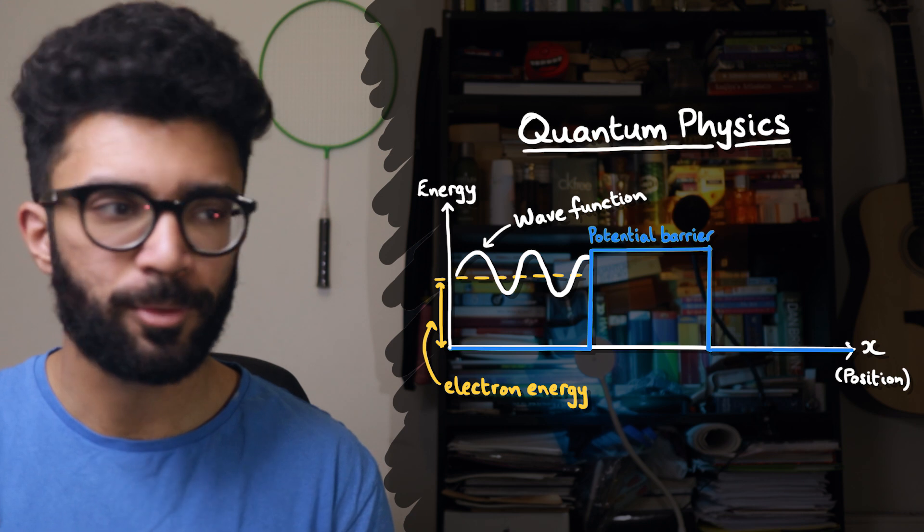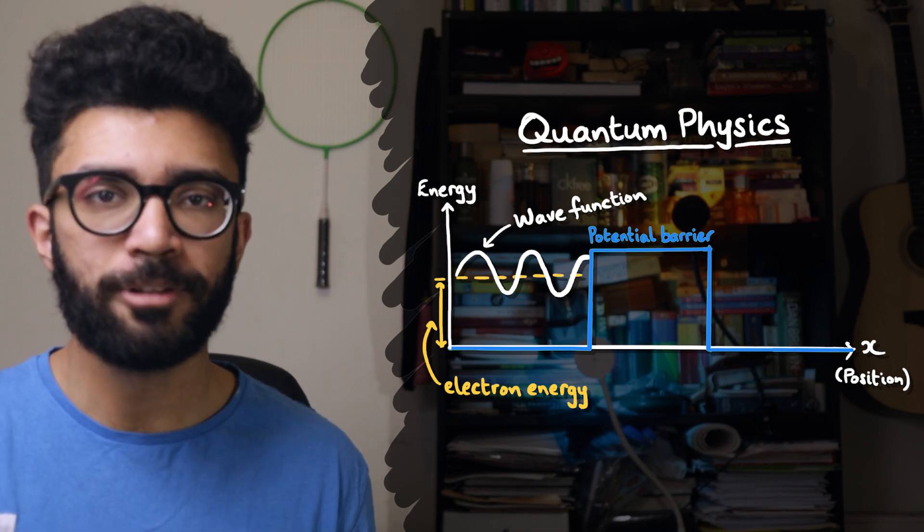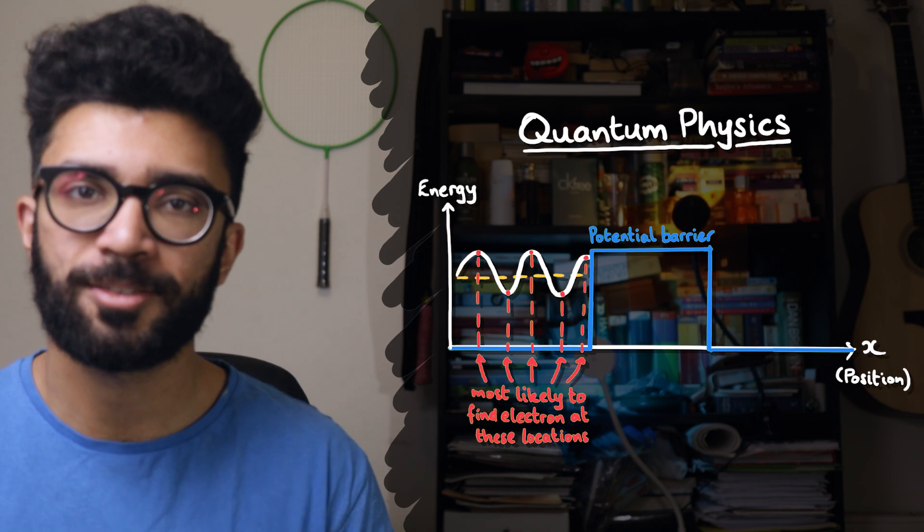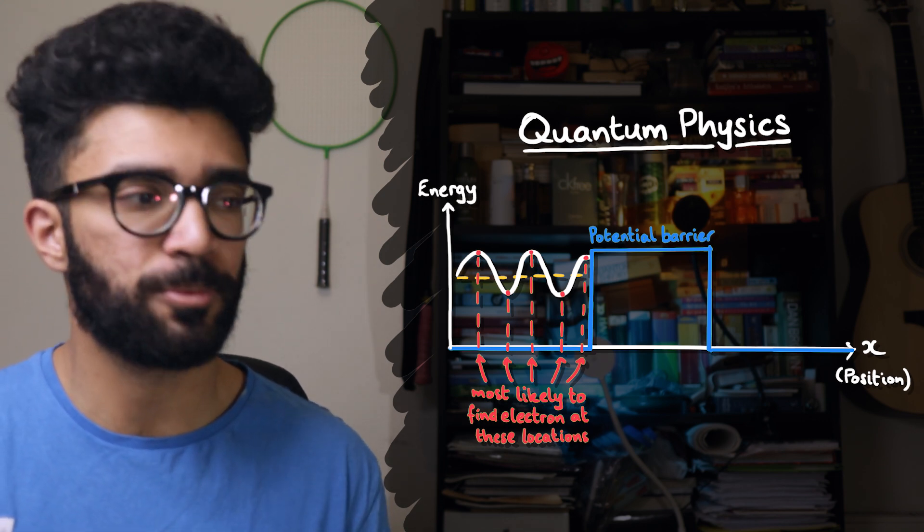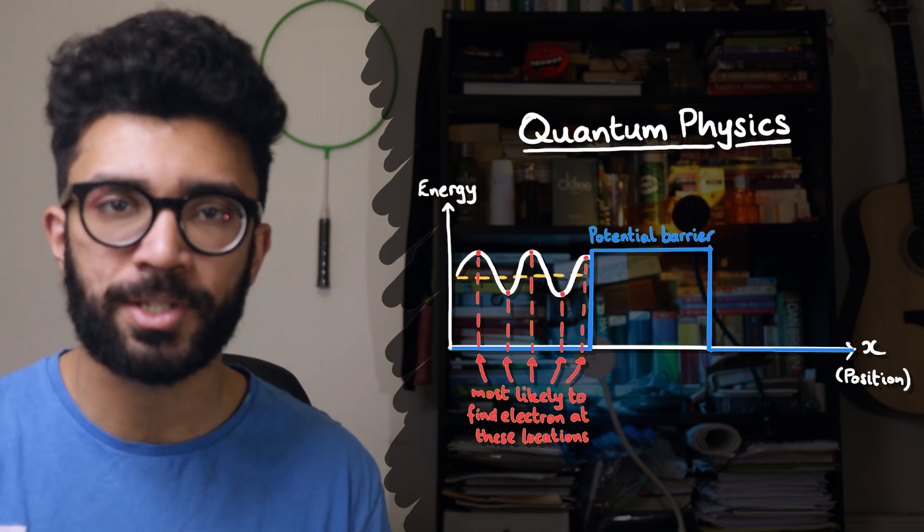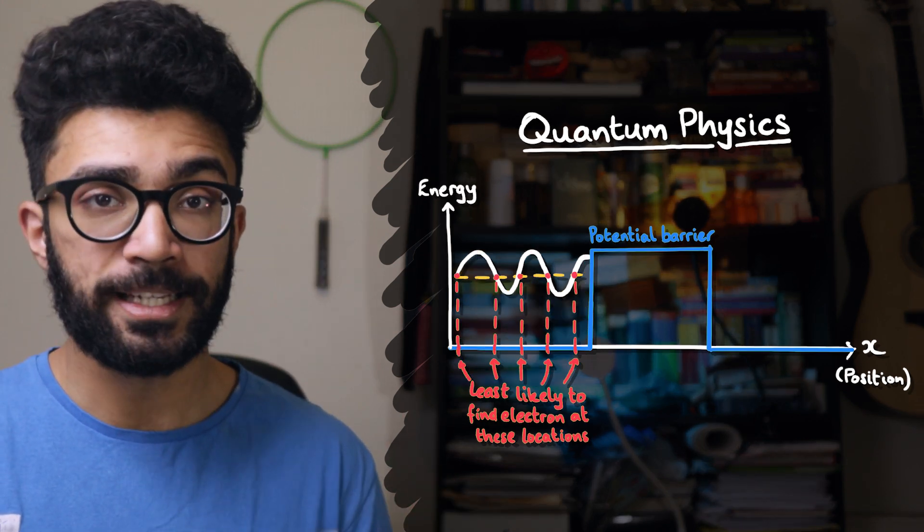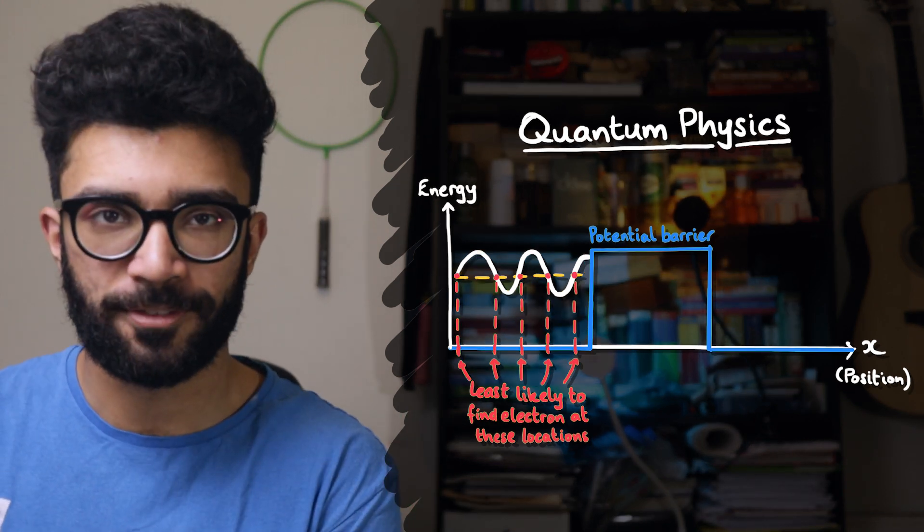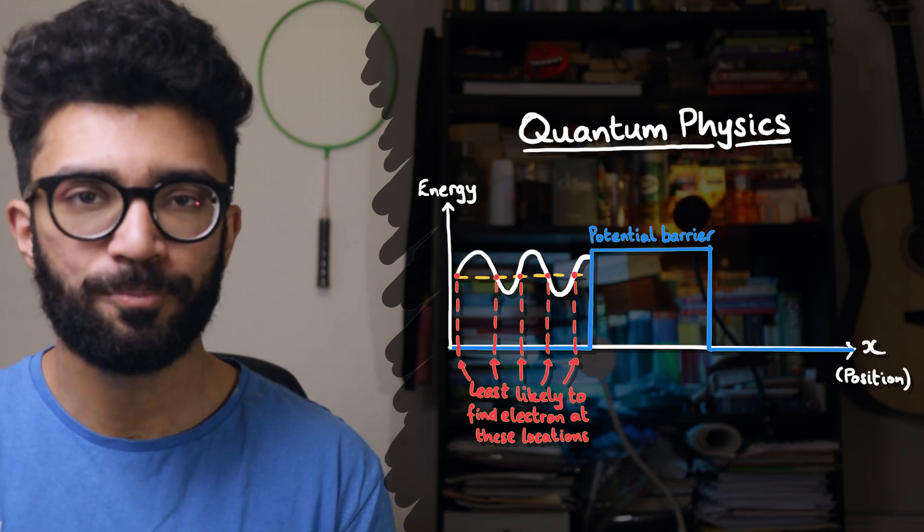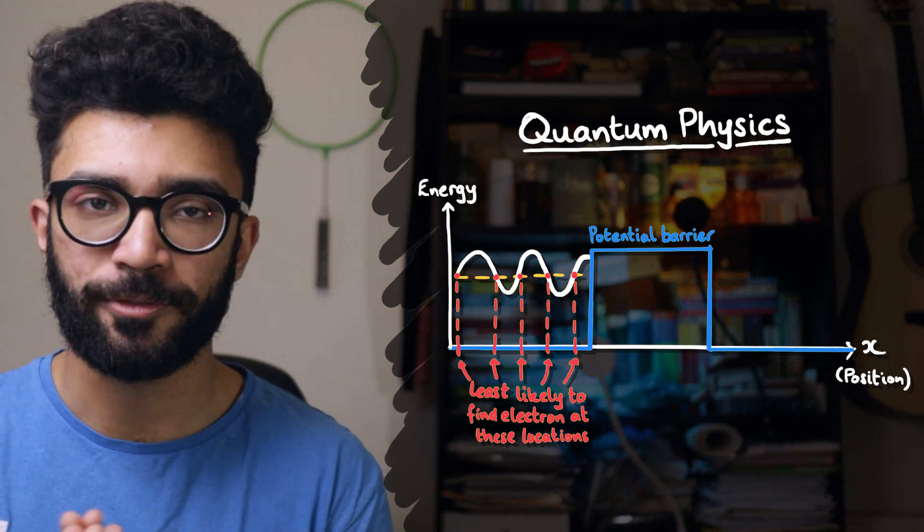Now, just as a quick summary, we found that the wave function for this particular region looked like a sine curve and any peaks or troughs of the sine curve correspond to the positions at which we're most likely to find the electron. And these are the positions at which we're least likely to find the electron. Again, these specifics don't really matter, though if you want to learn about it, check out my previous video.